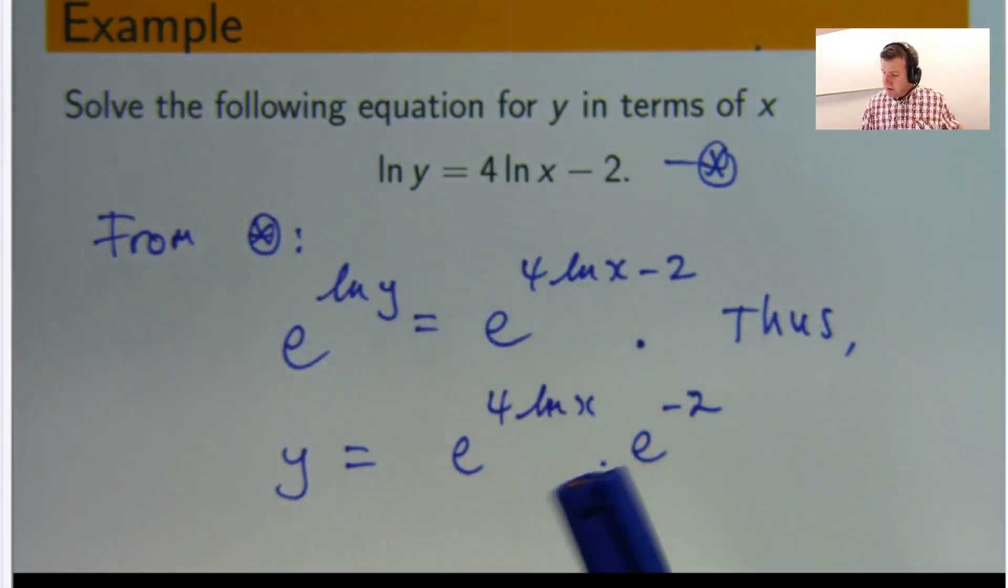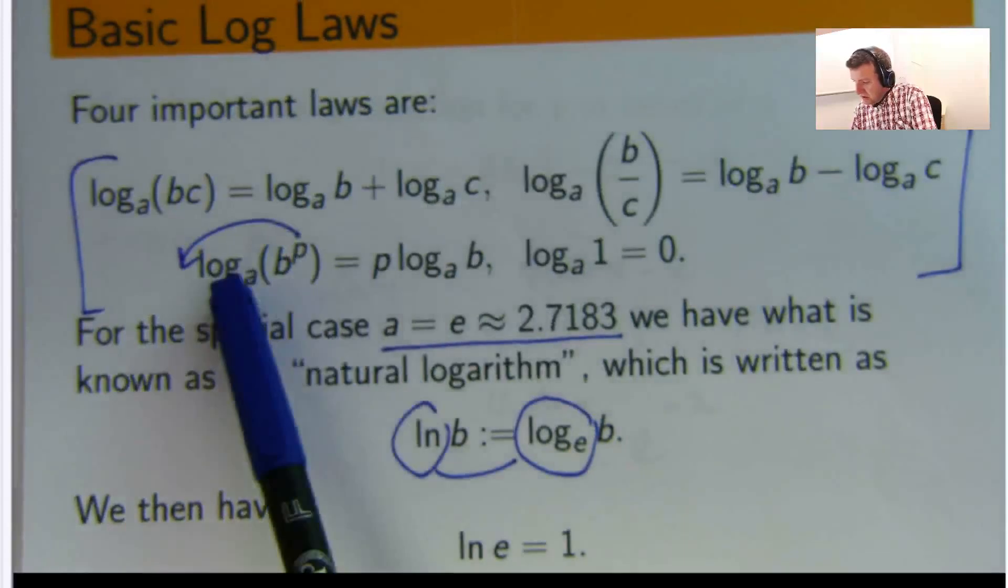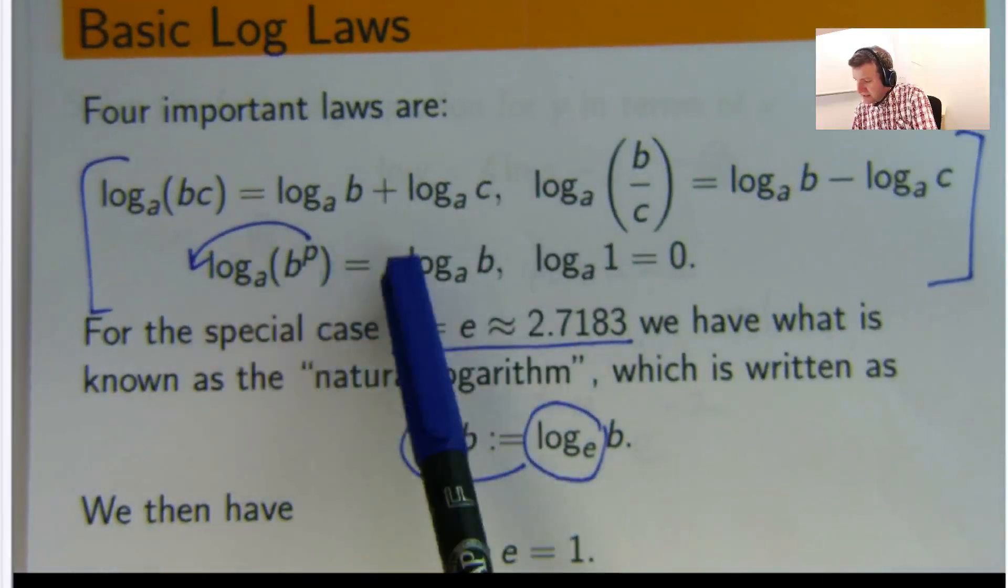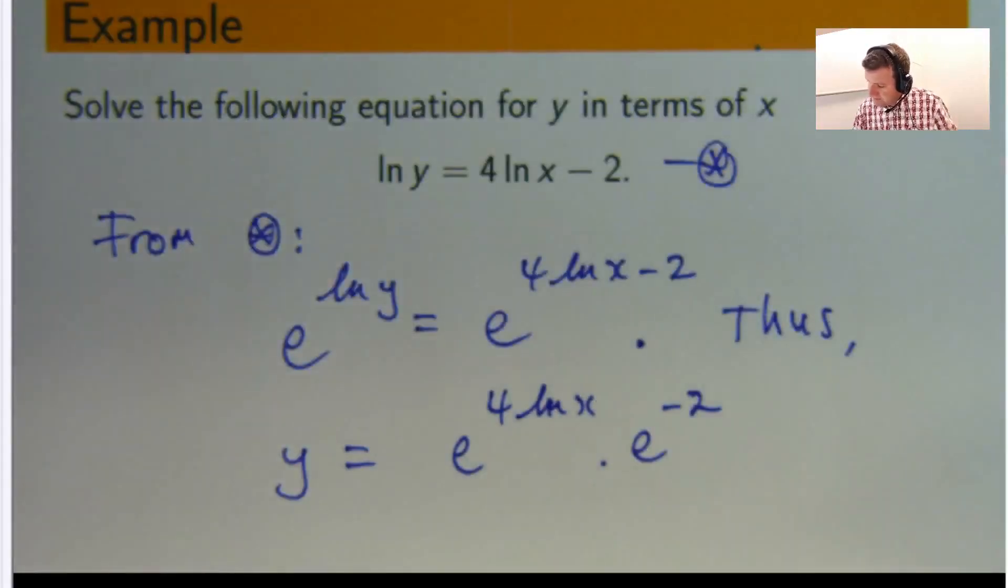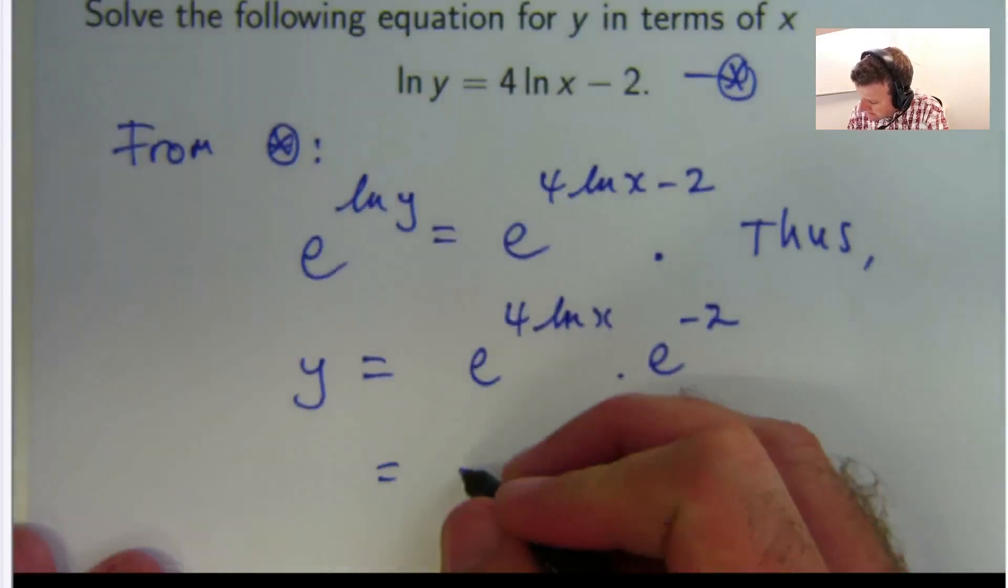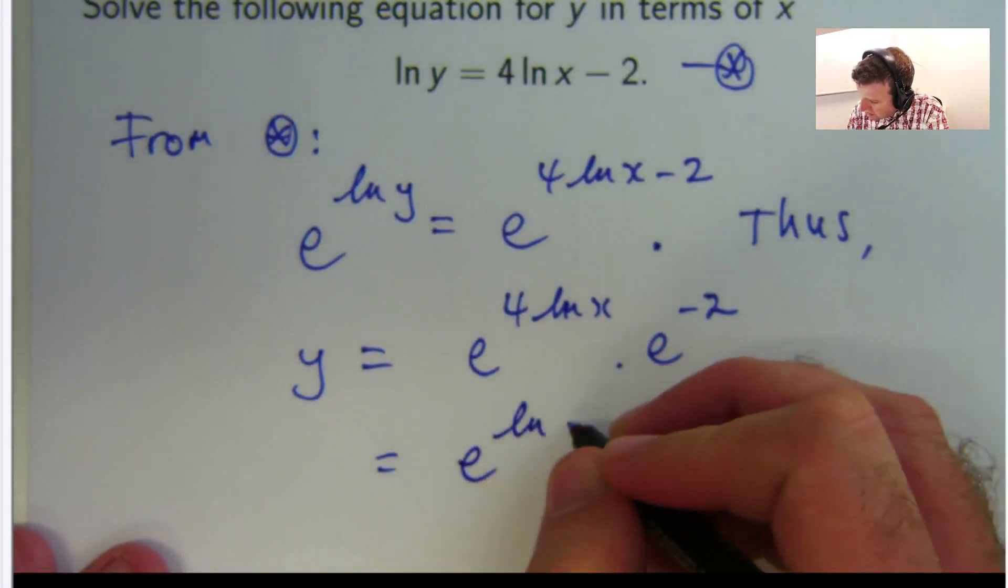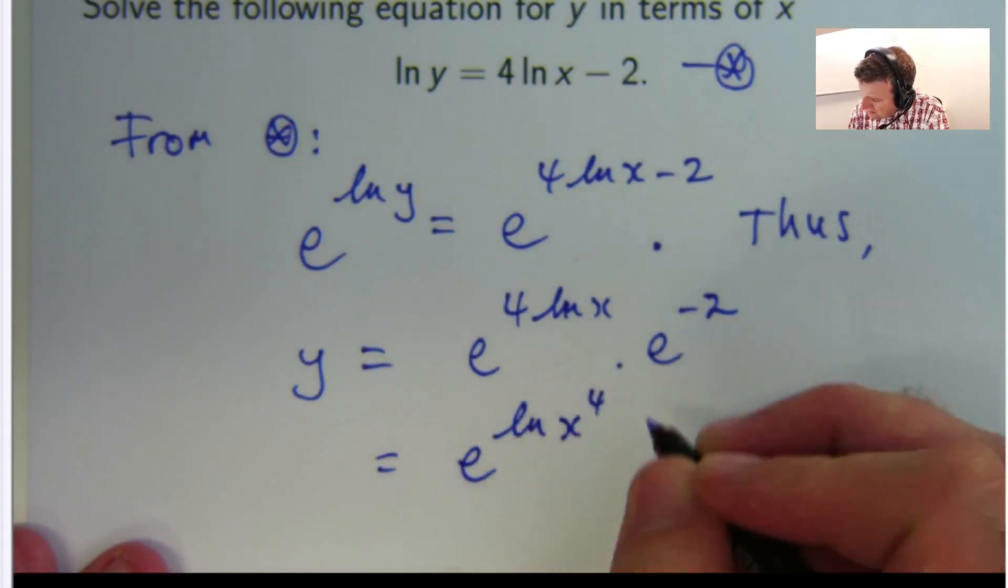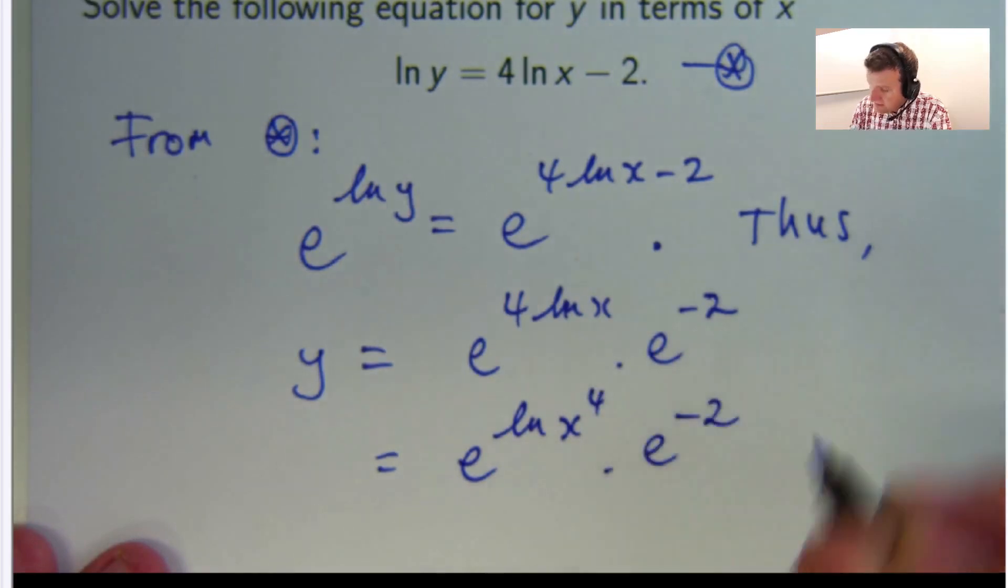Now, I can use my power law here, for logs, backwards. So I'm starting with this, I'm going to this, where p equals 4. So that would be the log x to the power of 4, times e to the negative 2.